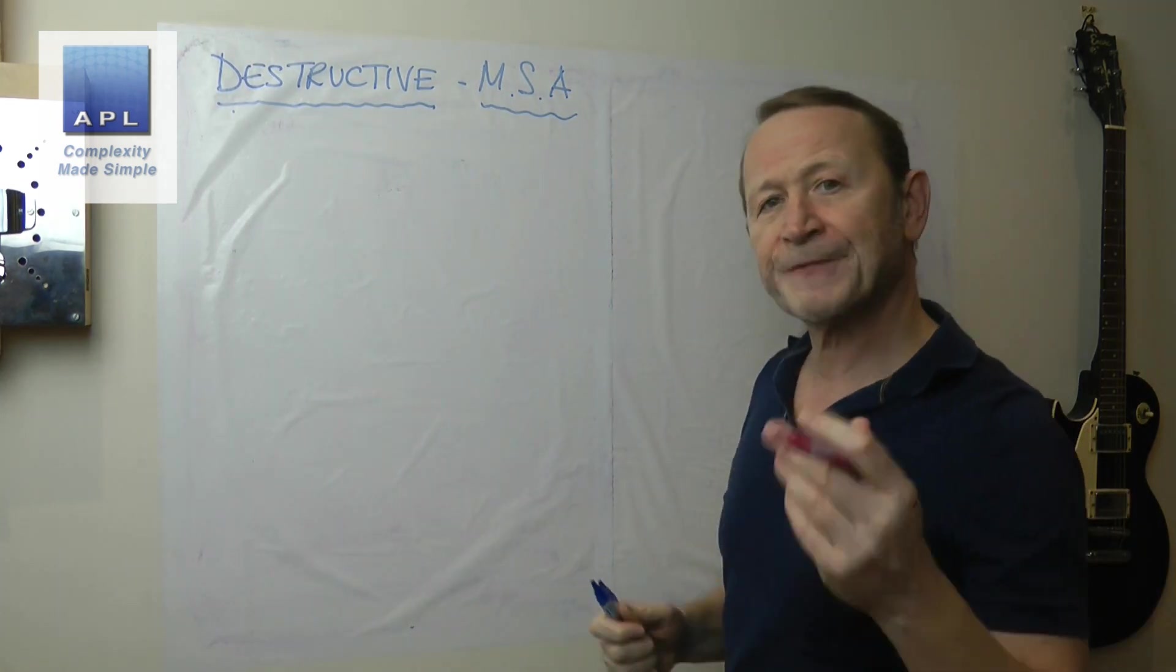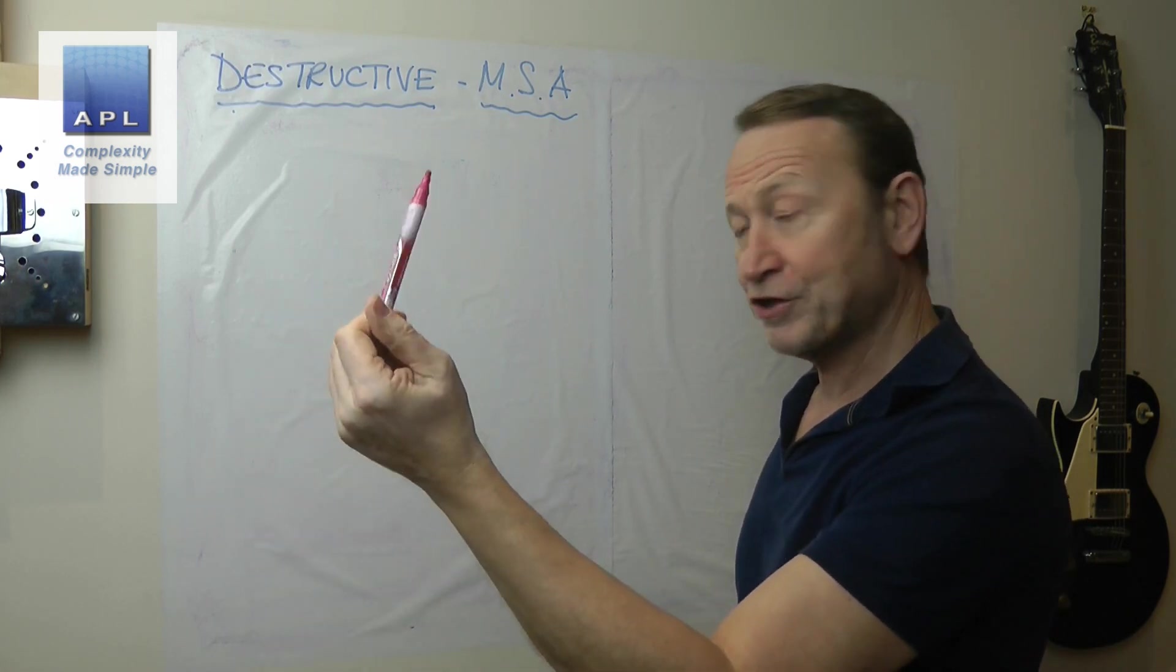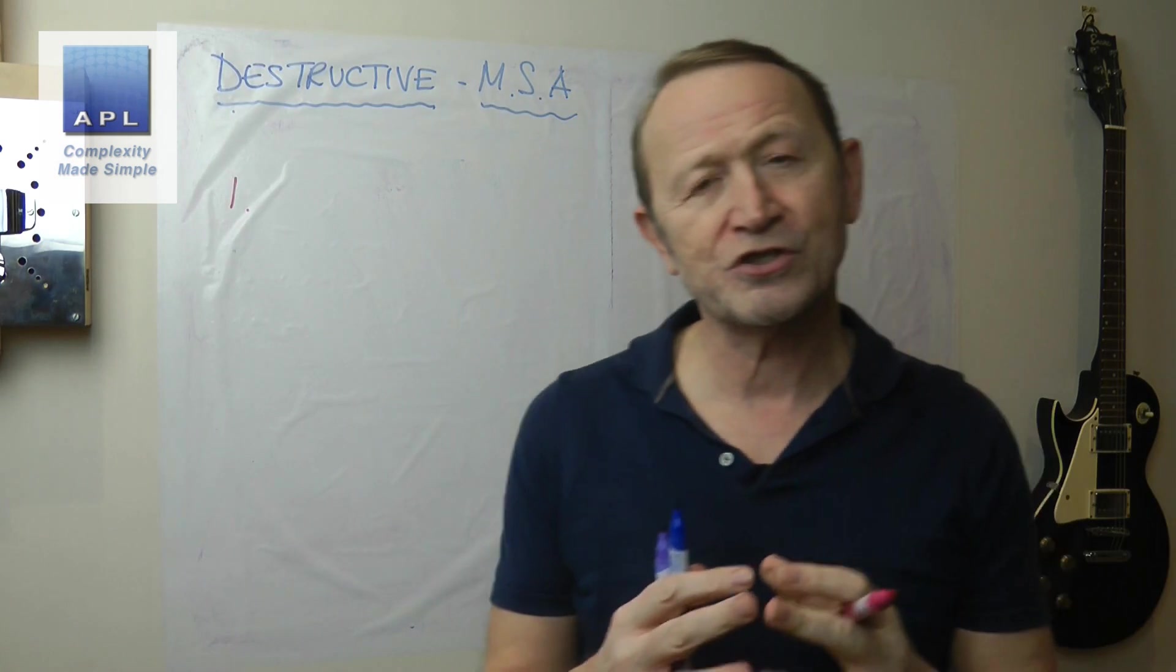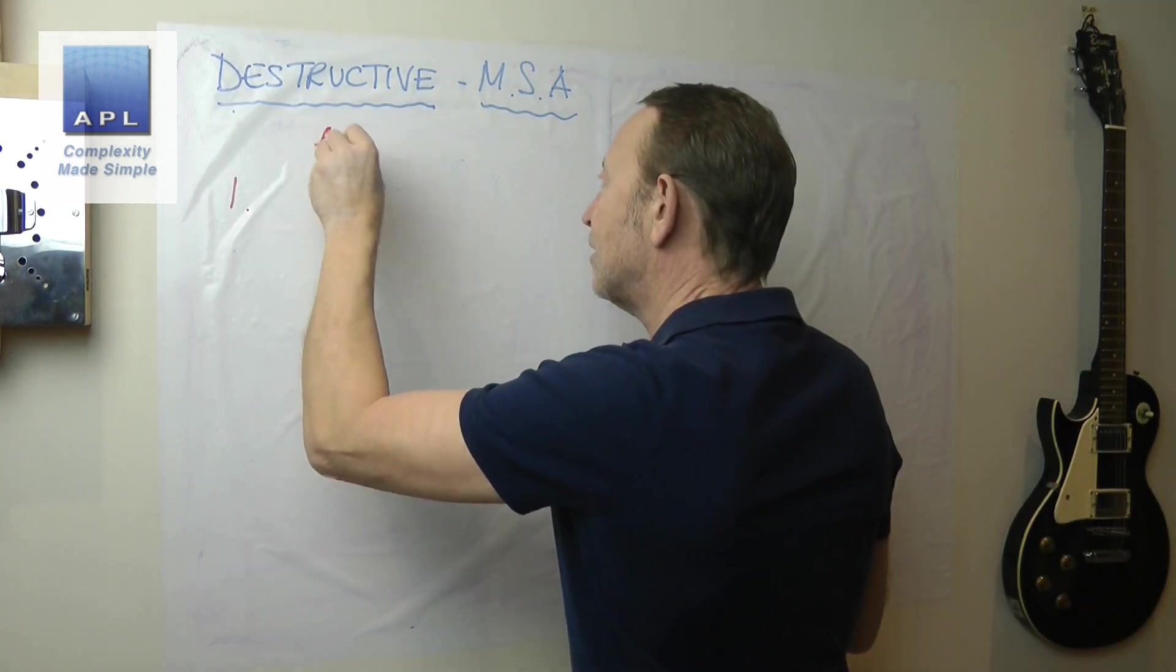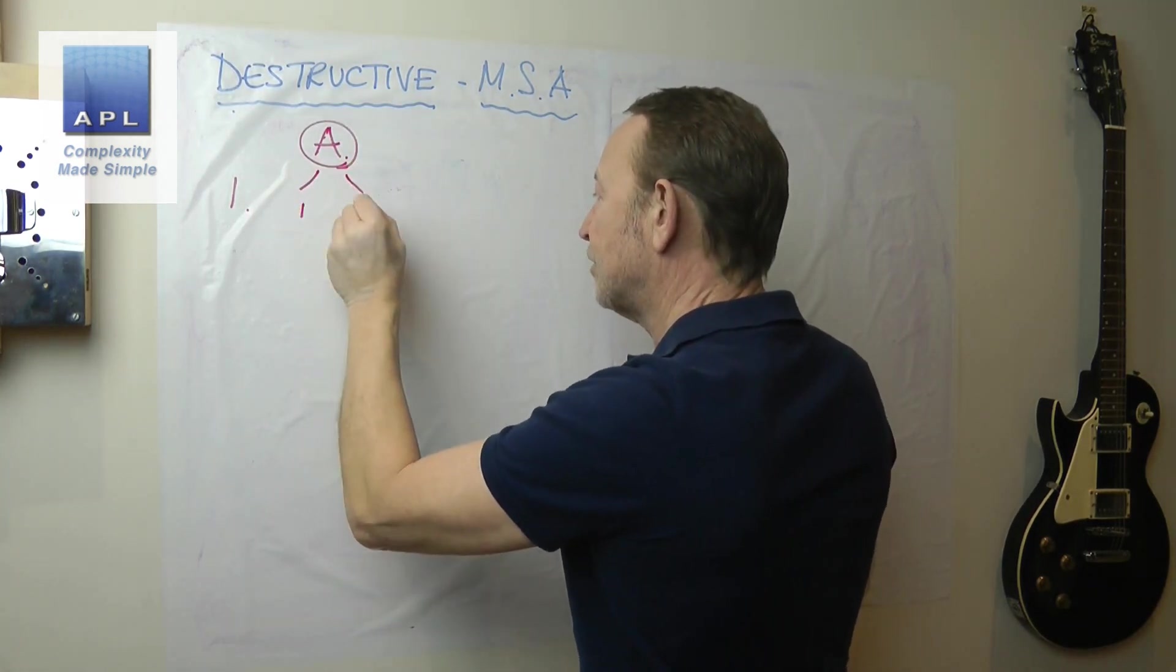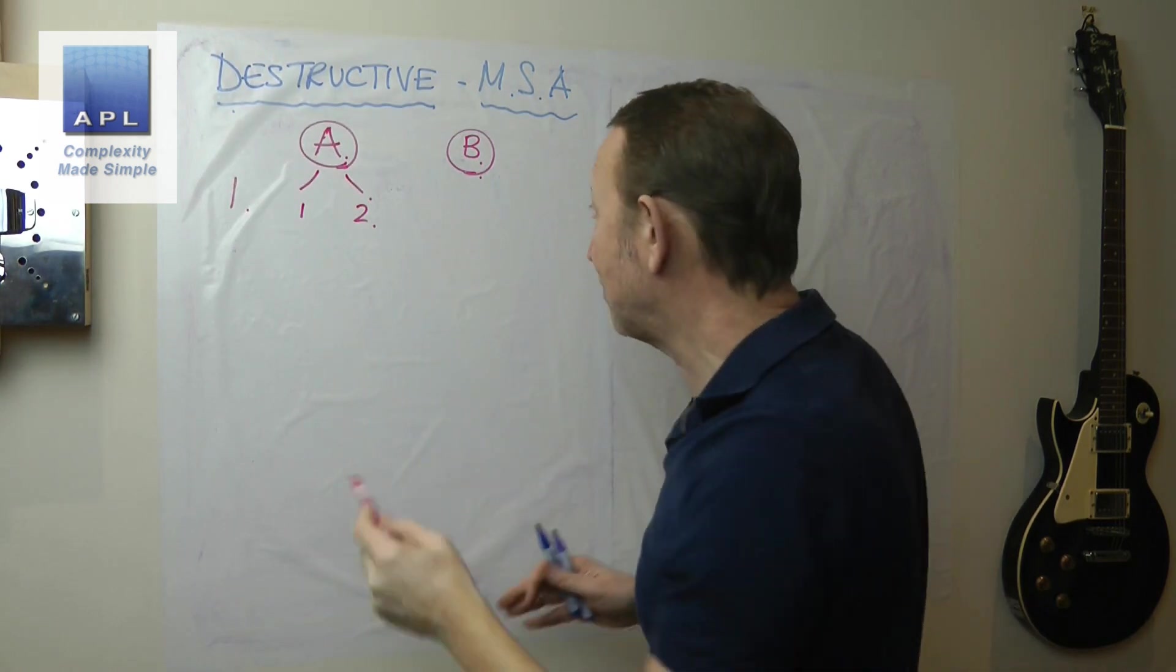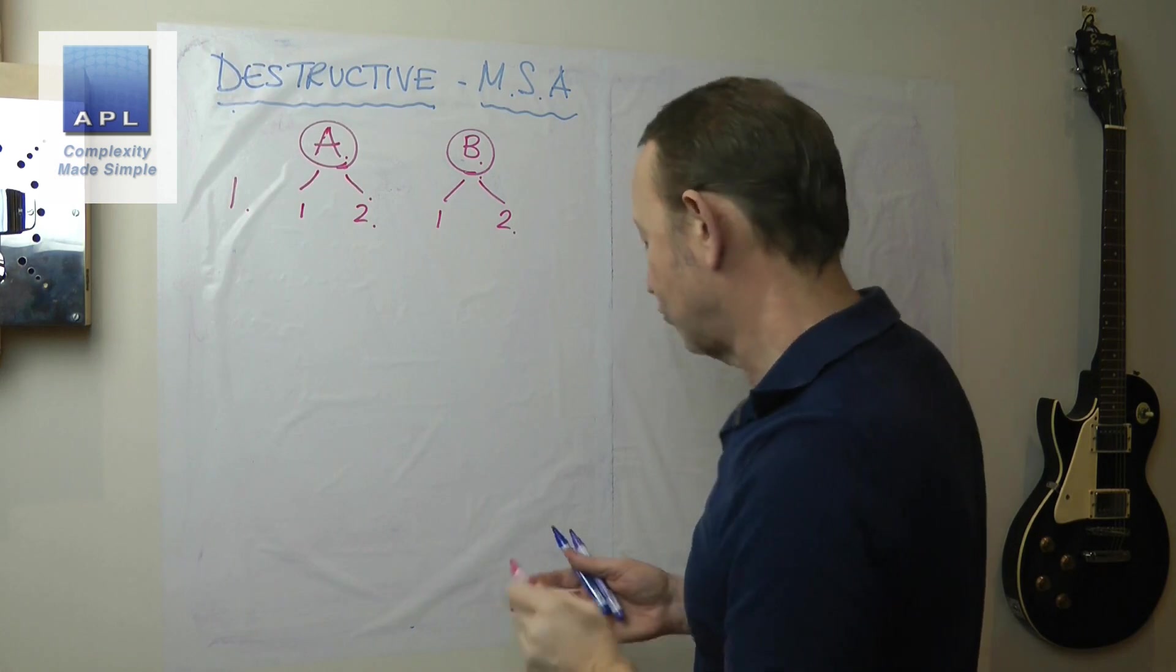So of course the way an MSA works: we want you to measure a component, let's say you're going to measure the diameter of that. So we have component number one, and in order to be able to see measurement error, what we have to do is measure this twice or multiple times. So normally measurement system A is going to measure our part twice, so we get two results.